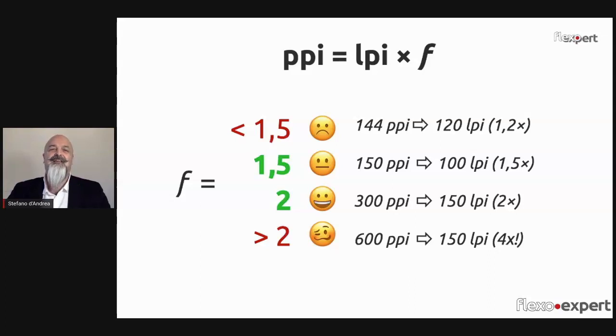If you want to print at 100 lpi (this is 40 lines per centimeter) and you have one image at 150 pixels per inch, that is sufficient. That is a factor of 1.5.